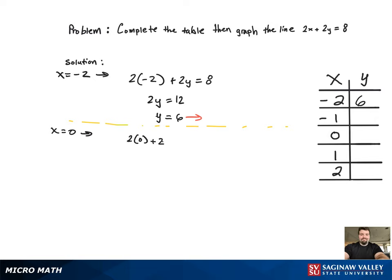Plugging that in, needing to solve for y again. Get 2y equal to 8, produces y equal to 4, and that's going to correspond with x equal to 0.